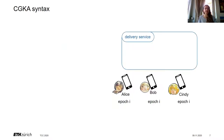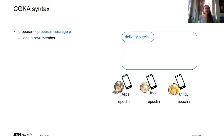To define CGKA security, I need to explain the syntax of CGKA. Take a small group with three parties — Alice, Bob and Cindy — all in epoch i. The network is called the delivery service, an insecure service that delivers messages to users. We adopted the propose-and-commit syntax of CGKA, which is also the syntax used by the MLS working group. There are two types of messages: proposal messages and commit messages. Proposal messages do not create new epochs — they are just proposals to change the group state in some way.